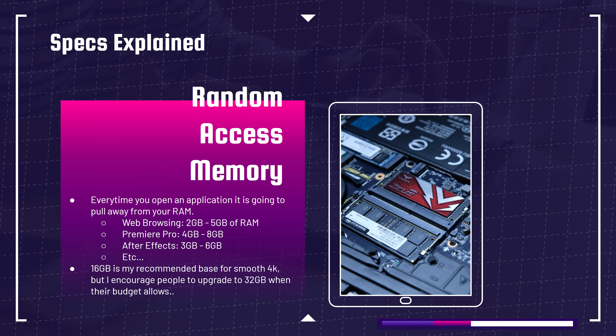I know I recommend computers with 8 gigs of RAM, and I think you can get away with it. But for optimal 4K video editing performance, 16 gigs of RAM is a fantastic starting point. I know budget constraints won't always allow it, but that is my recommendation. As you can afford more RAM, an upgrade to 32 gigs is fantastic because it gives you even more of a ceiling for smooth playback and multitasking.